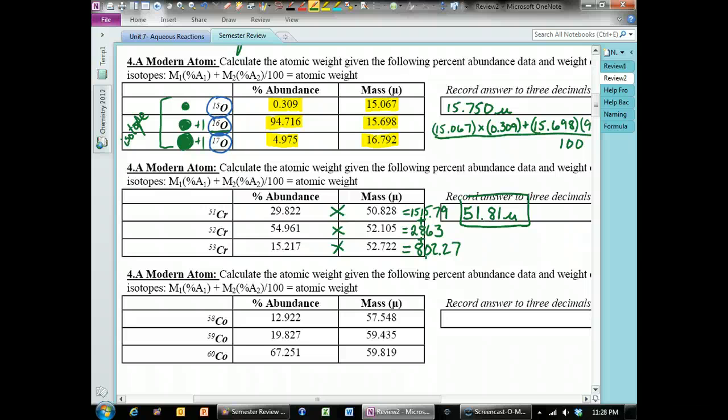The last one, same thing, where we take the two numbers of the percent abundance times mass, multiply them by each other, and then add them all up.